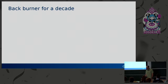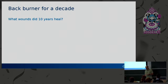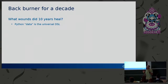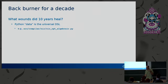They say time heals all wounds, and I don't know if that's true, but I do know that if you ignore technical problems long enough, they will probably become irrelevant. So what wounds did 10 years heal? First of all, we don't have to write a DSL anymore. Pretty much everything that Elberg or any other code generator generator ever needed, we can handle with just Python data. We can make data structures that encapsulate 'match this, do that' really easily with just Python. NIR-OPT algebraic is an existence proof that that kind of architecture works really well.